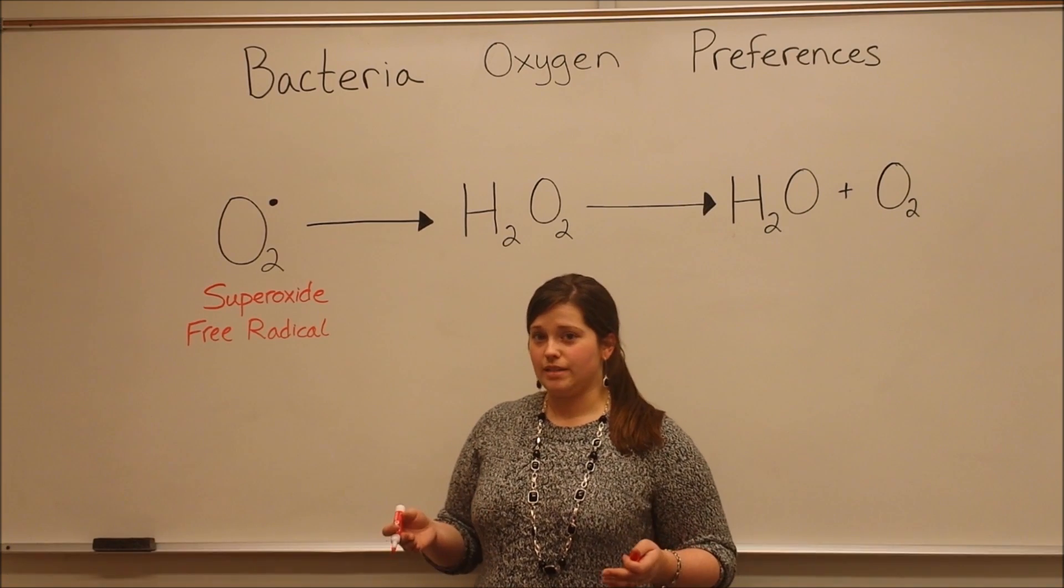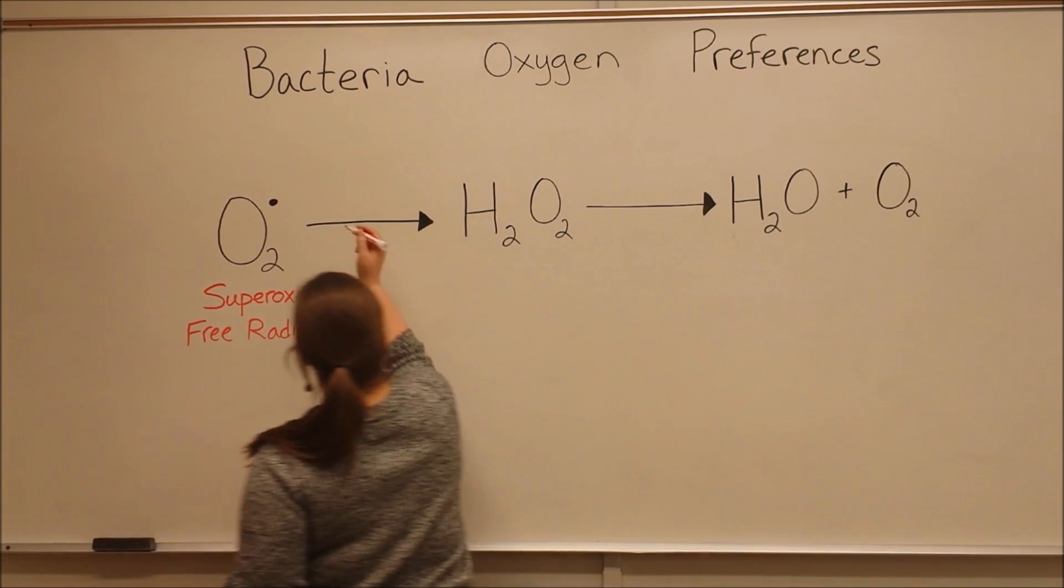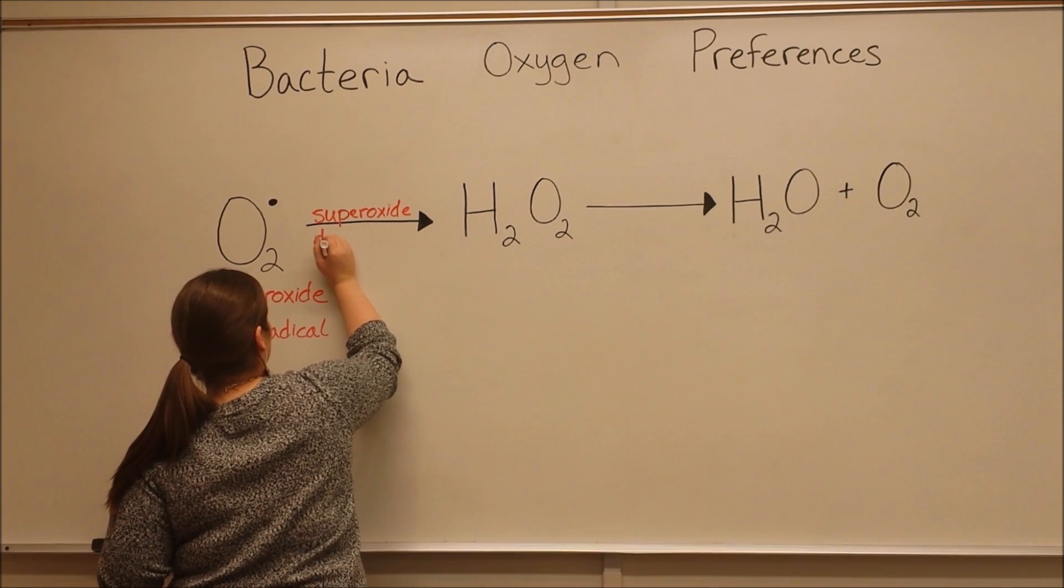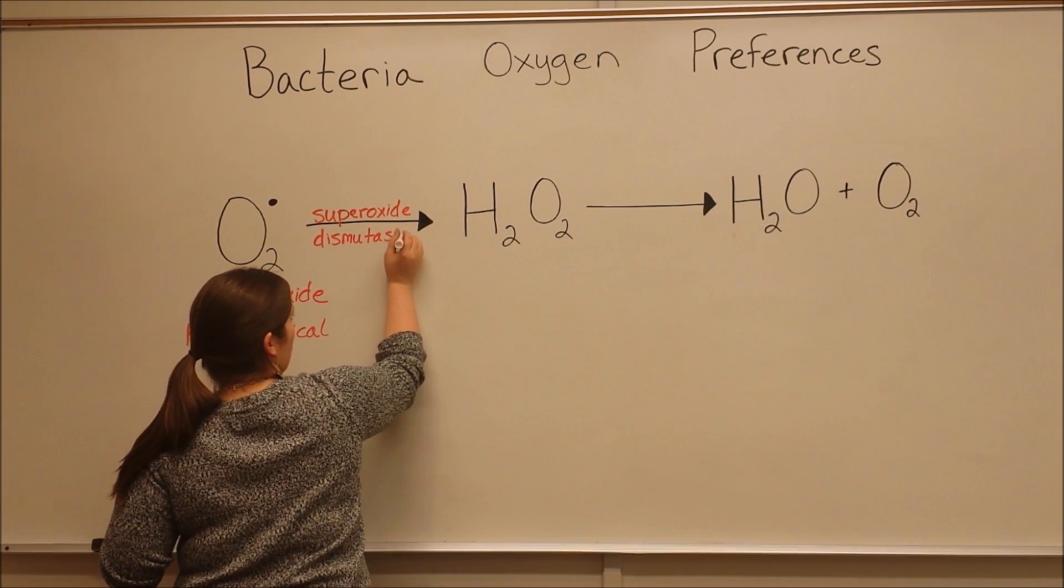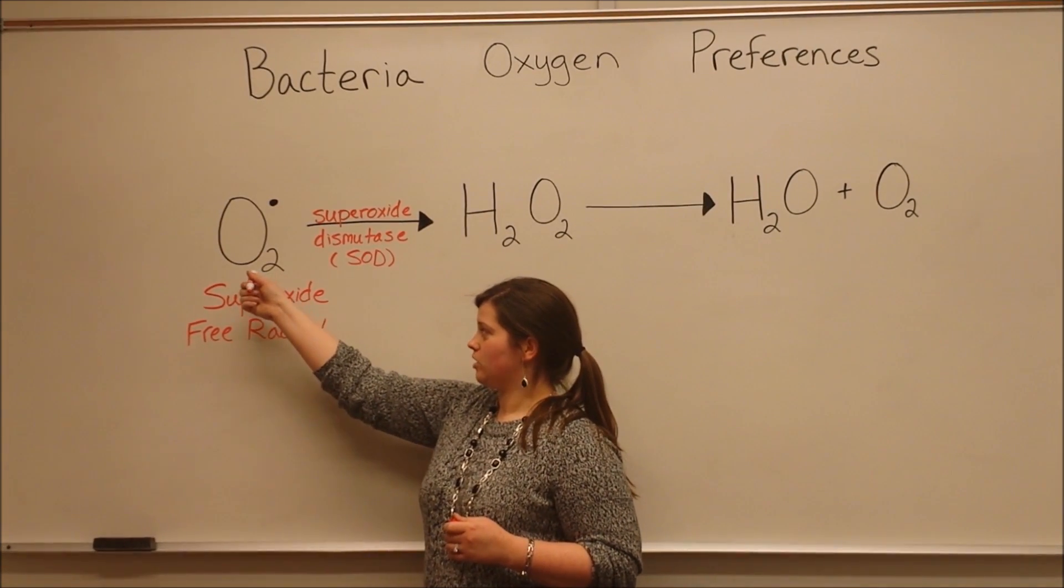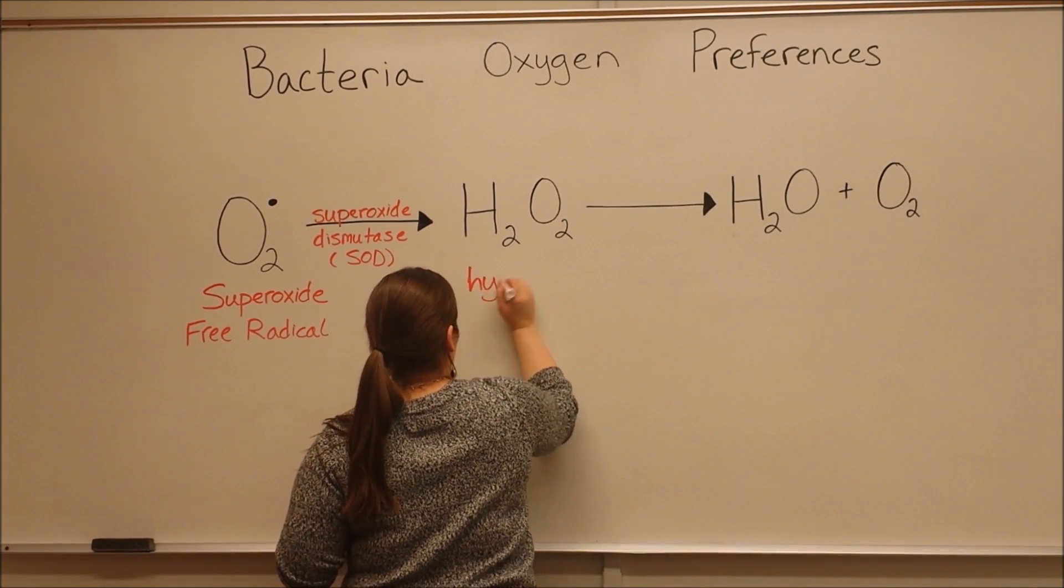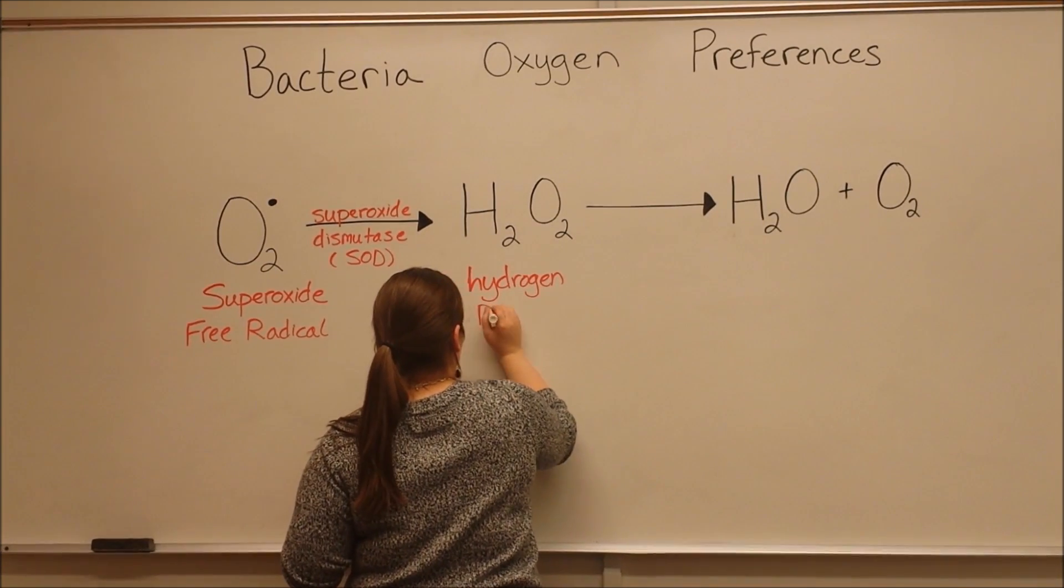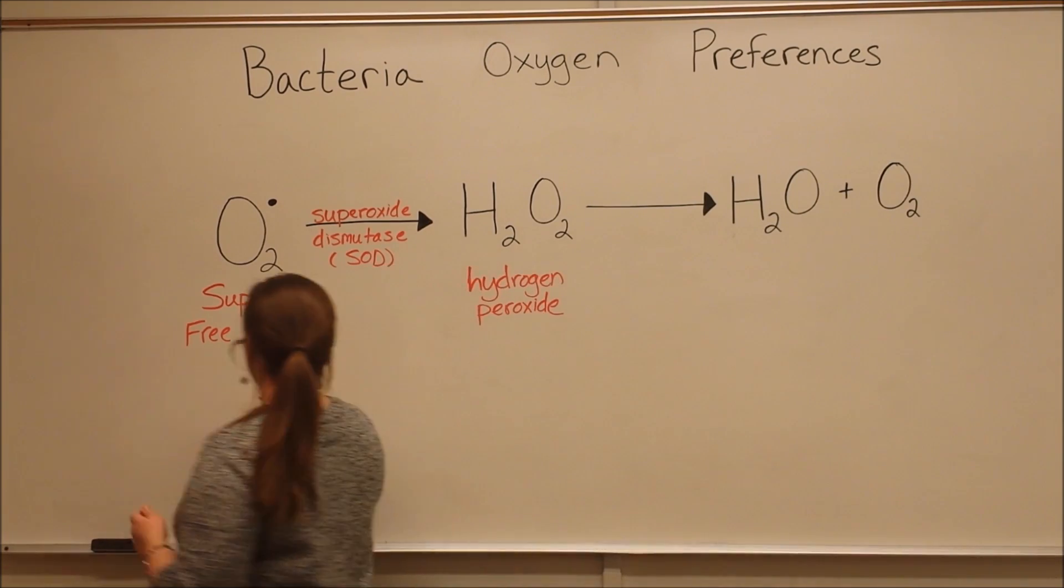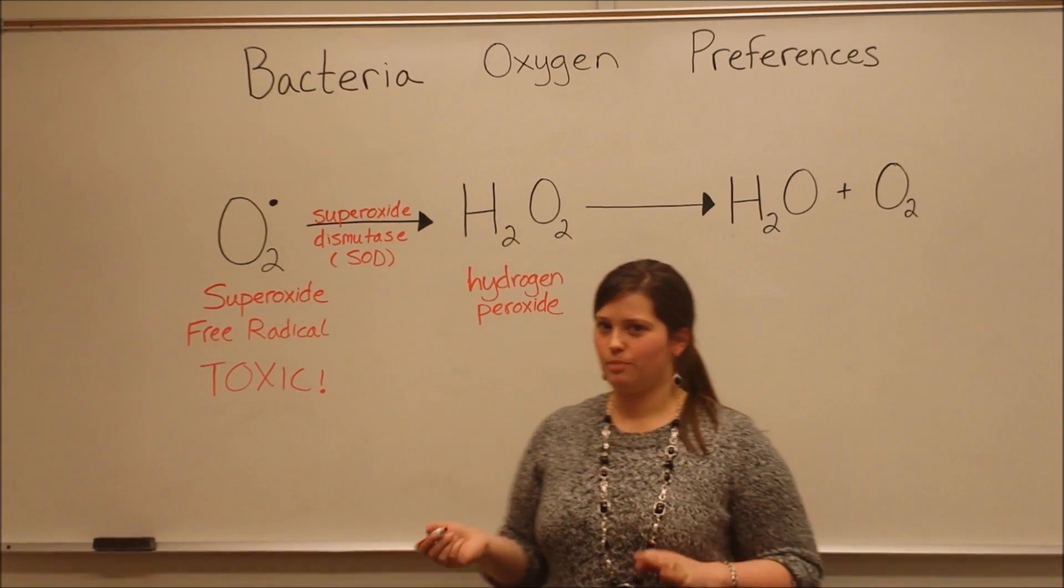Many organisms, including humans, and most bacteria, have enzymes to help deal with these free radicals. One enzyme is called superoxide dismutase. You'll also hear it referred to as SOD, S-O-D. So superoxide dismutase changes superoxide free radicals into hydrogen peroxide. This means you go from having superoxide free radicals, which are very toxic, to having hydrogen peroxide, which is still toxic, but less so.